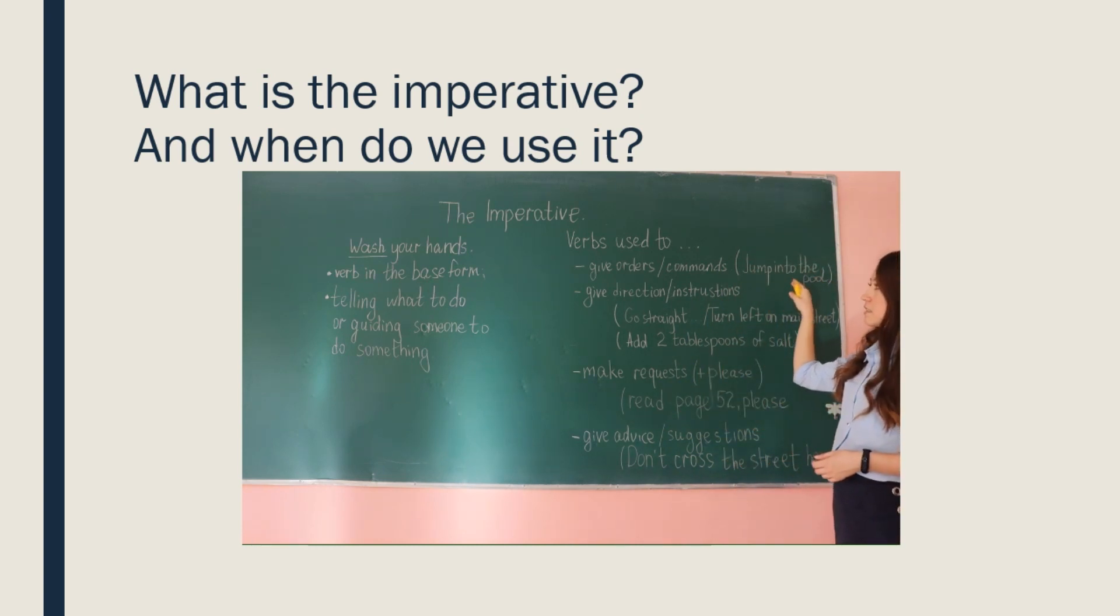This sentence is an order. То есть ваш инструктор говорит прыгай в бассейн. And as we can see, there is no subject. We don't say are you, they jump. The subject is implied. That is, it always means you jump into the pool.